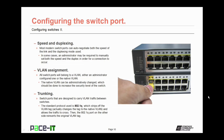Next up is VLAN assignment. All switch ports will belong to a VLAN — either an administrator-configured one or the native VLAN. The native VLAN can be administratively changed, which should be done to increase security. Then there's trunking: trunk ports carry VLAN traffic between switches using the standard protocol 802.1q. 802.1q changes the VLAN tag to match the native VLAN, allowing traffic to cross the port, then the 802.1q port on the other side reinserts the original VLAN tag.